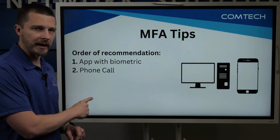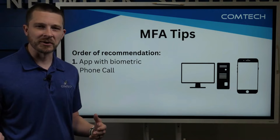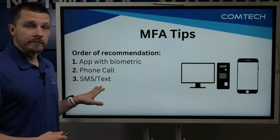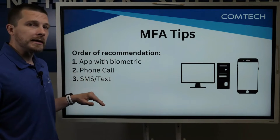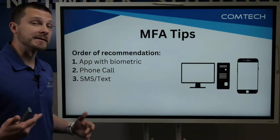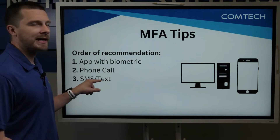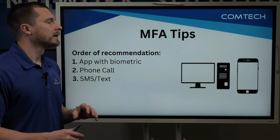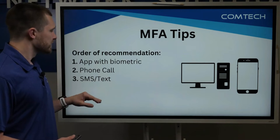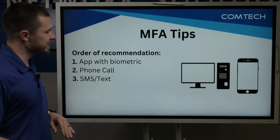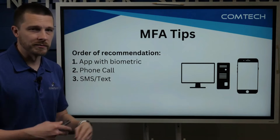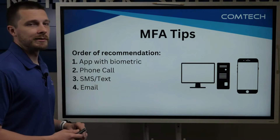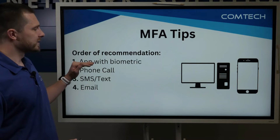If you can't do an app with a biometric, the second option is a phone call — the old-fashioned phone call. Put your number in, make it call your cell phone. The next one is SMS or text. You'll notice the order I'm going in is what ComTech recommends. I recognize it's not always the easiest — a lot of people take the text option and move it to the top just because it's simple, but that's not what I recommend for security purposes. It's just easier to move text around versus phone calls. So: app with biometric, then phone call, then text. And if you can't do any of those, because there are some systems where none of these are an option, then you could set it up with email. That is your final option — always go with the first one first.